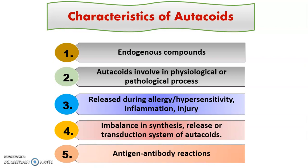In their mode of action, they are generally involved in antigen-antibody reactions. For example, when you have a dust allergy or pollen grain allergy, the antigen triggers the production of antibodies. These antibodies then activate the mast cells, and the mast cells release different types of autocoids.